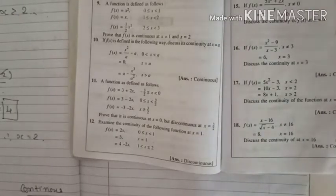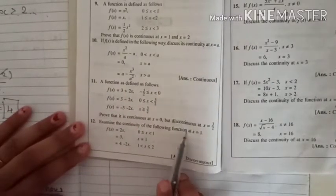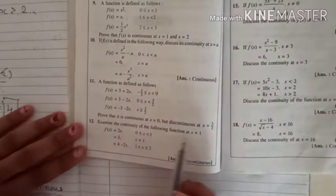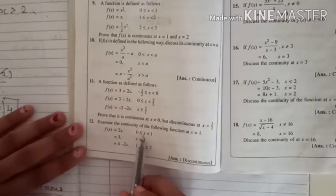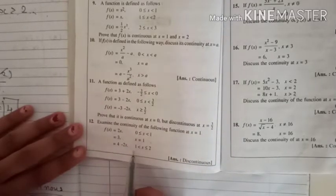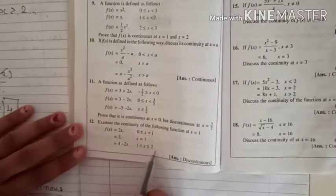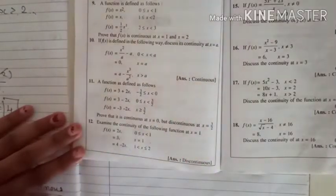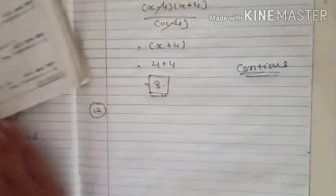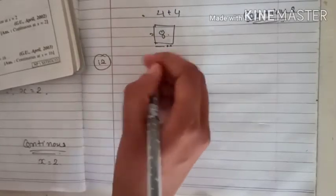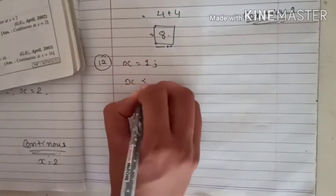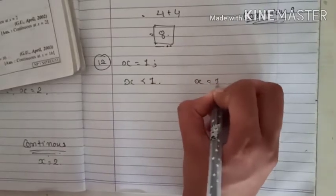Now solving practical number 12: examine the continuity of the function at x = 1. The function is: f(x) = 2x when x < 1; f(x) = 3 when x = 1; and f(x) = 4 − 2x when x > 1. We check continuity at x = 1 by evaluating all three cases.